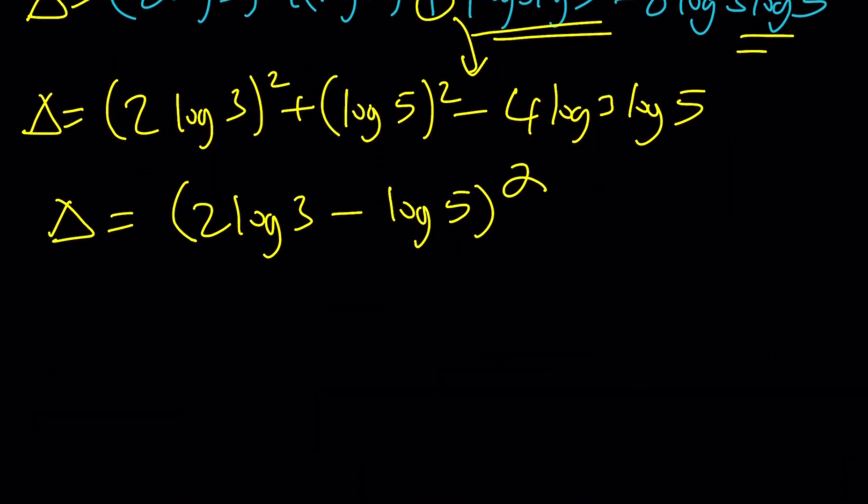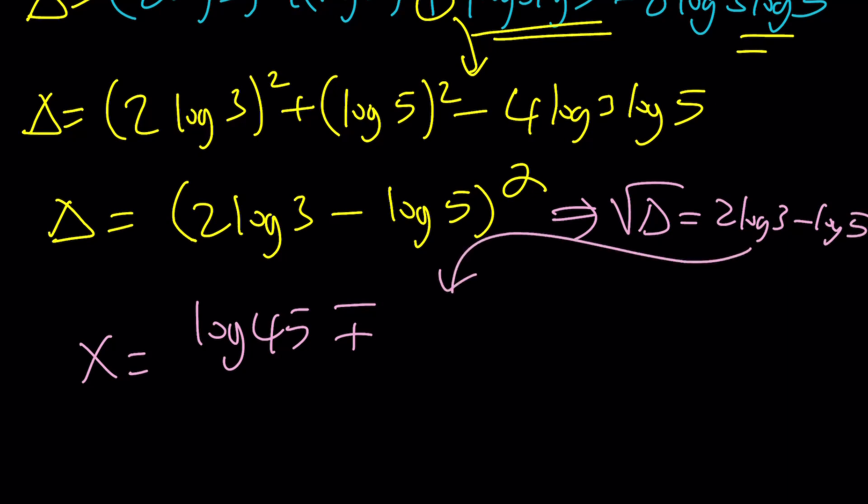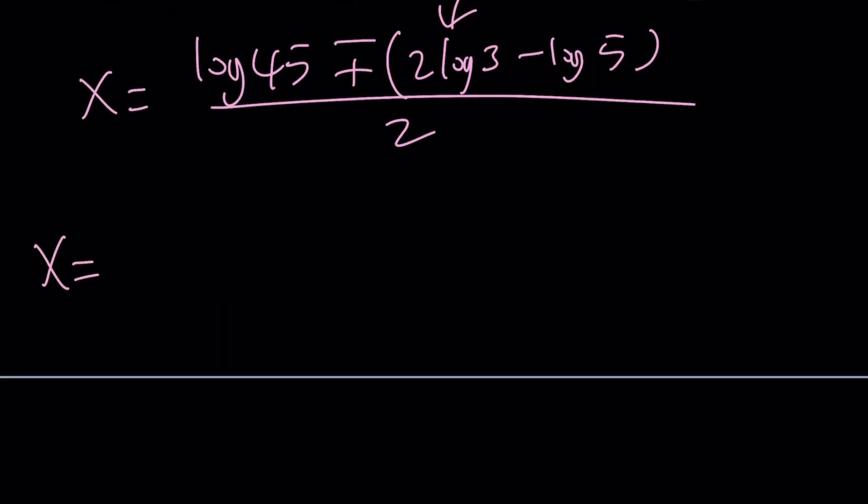So x is going to be the following then. x equals log 45 plus minus this square rooted. So if you square root delta, you're going to get 2 log 3 minus log 5, which I'm going to substitute here. Because remember, negative b plus minus the square root of delta, which is b squared minus 4ac. It's going to come in parentheses because there's going to be a plus and minus signs. And now we can go ahead and separate them. Let's go ahead and write each one separately. At the same time, breaking down log 45. Again, log 45 is log 9 times 5 and 9 is 3 squared. So we can break it down into 2 log 3 plus log 5. Make sense? That's perfect.